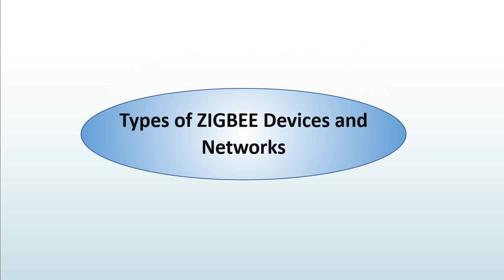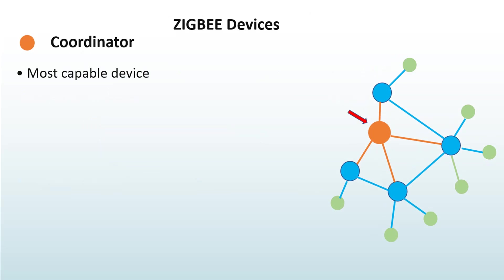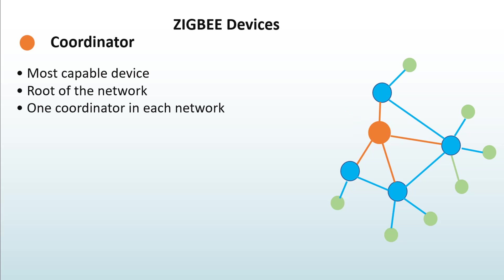There are three types of Zigbee devices: coordinator, routers, and end devices. The Zigbee coordinator is the most capable device — it is the device that starts the network, acting as the root. There is exactly one coordinator in each network. Its important tasks include channel selection.